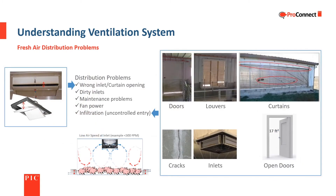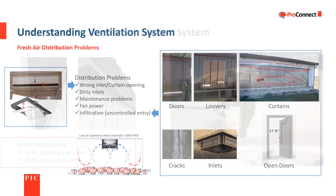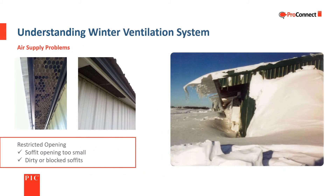For the system to work correctly, air needs to enter through the inlets at the correct speed. Fresh air distribution problems can be caused by wrong inlet or curtain opening, dirty inlets, maintenance problems, fan power, and infiltration, which is uncontrolled entry of air. Power ventilated barns need a plentiful supply of fresh air. A soffit or attic opening that is too small, dirty, or blocked will rob the system of air and result in poor ventilation.